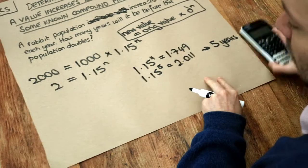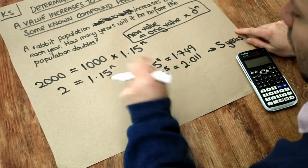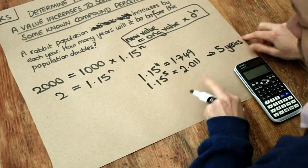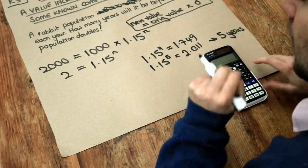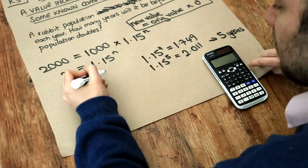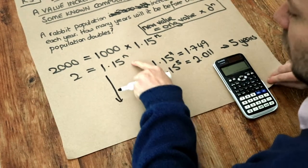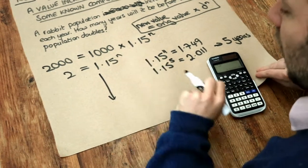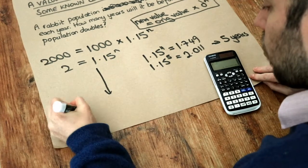Now you might wonder if there's a way we could actually work out n algebraically without having to use trial and error. And that actually is, but it uses knowledge that you'll probably learn when you're about 16, 17. But let me just quickly teach you, if you're trying to find an unknown power, we can actually use something called logarithms.